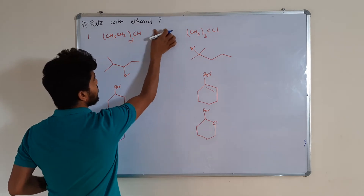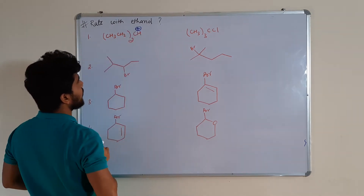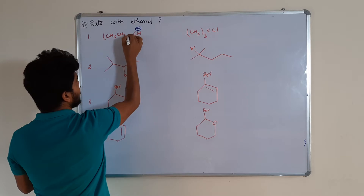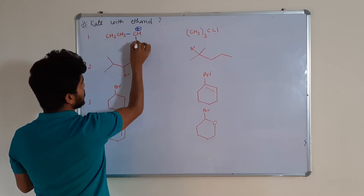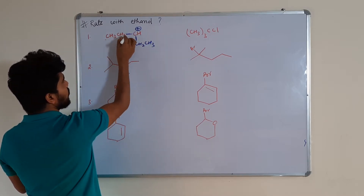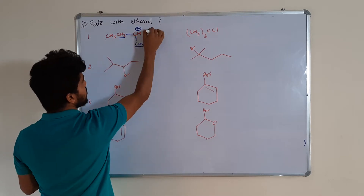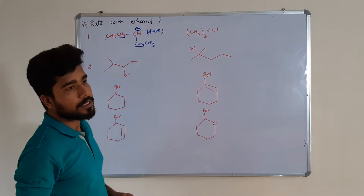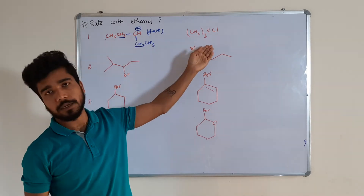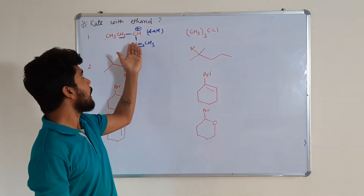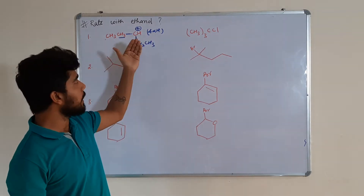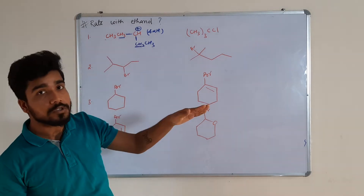Let's start. We will remove the leaving group and form the carbocation. If I expand this structure, it is basically two ethyl groups attached at this CH — CH2CH3. This is the actual compound. It has two alpha hydrogens at this position and two alpha hydrogens at this position, so it has a total of four alpha hydrogen atoms. Why are we comparing alpha hydrogens? Because the most priority is given to aromaticity and resonance. There is no aromatic compound in these two, and the carbocation doesn't have resonance because there is no conjugation. So ultimately we will move to hyperconjugation.